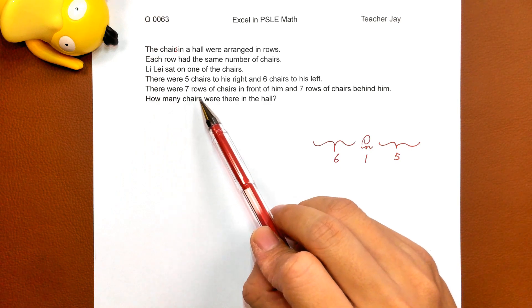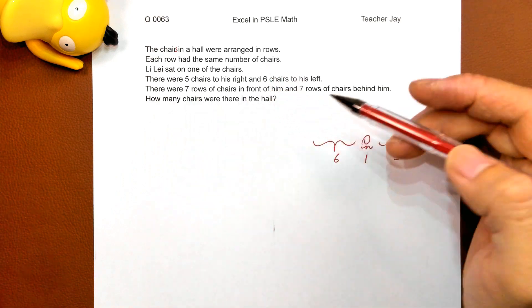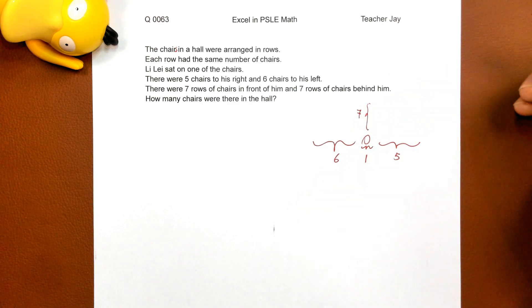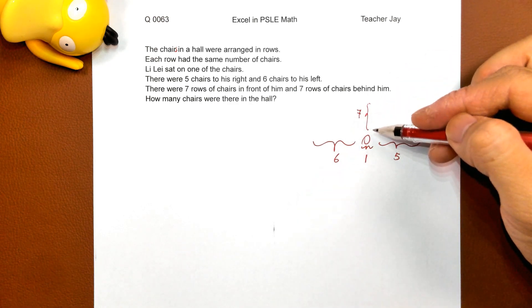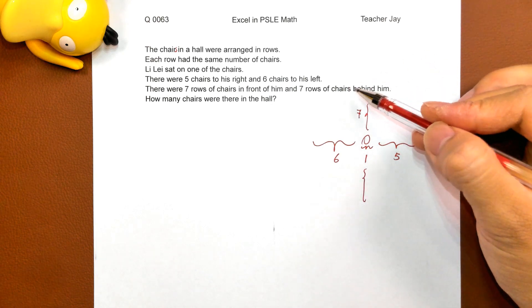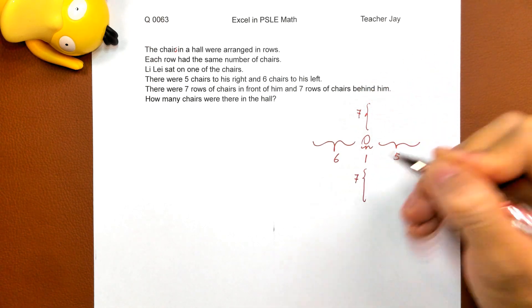There were seven rows of chairs in front of him and seven rows of chairs behind him.